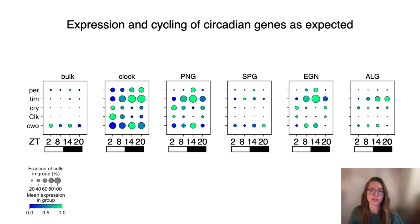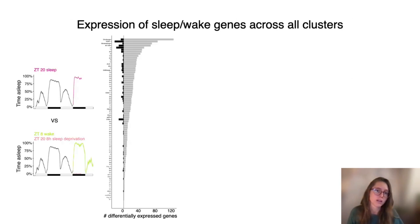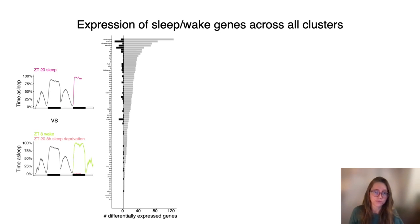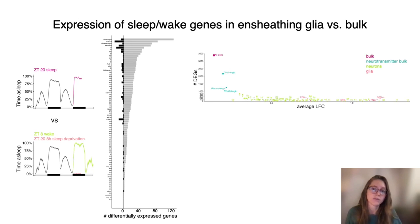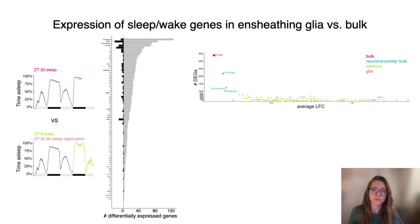Now that we are confident in the dataset, we went on to perform differential expression analysis between sleep and wake conditions. I'm plotting here all the clusters that have differentially expressed genes above certain thresholds. Out of 89 clusters, 76 have either up- or down-regulated genes. We found that the cell type that changes its transcriptome the most is the n-sheathing glia, which are similar to mammalian microglia. However, when we compare the distribution of all cell types across the amount of differentially expressed genes and the average log fold change, you can appreciate that while the bulk sample has many differentially expressed genes, these genes have really low log fold changes on average.